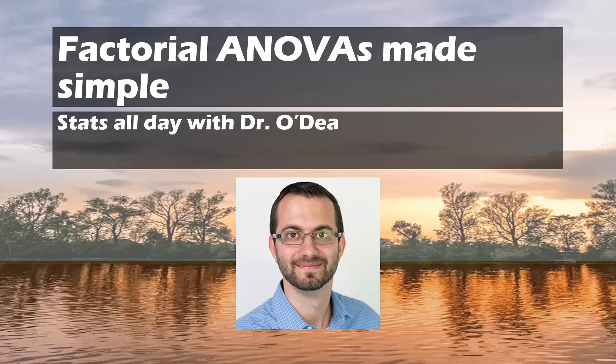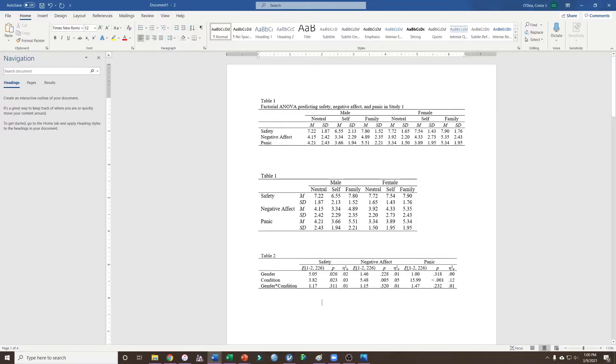Unfortunately, once we get up to the complexity of a factorial ANOVA, there just gets to be so many numbers. We've got the main effect of one variable, we've got a main effect of another variable, we've got their interaction, we've got means and standard deviations all over the place. It just gets so complex, and a lot of times we can benefit from just adding in a simple table. So what we're going to do is talk through a few different ways that you could approach making a table for a factorial ANOVA.